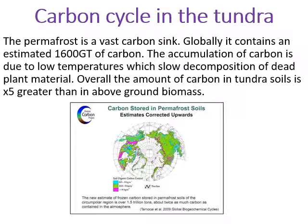What about the carbon cycle in the tundra? The permafrost — that permanently frozen ground — is a really important store of carbon, a really important carbon sink. We reckon it has about 1,600 gigatons of carbon stored within it. This is because the extremely low temperatures make decomposition of any dead plant material extremely slow. Where we do get vegetation during the summer season, it decomposes at an extremely slow rate, leaving a huge amount of organic matter locked up within the permanently frozen ground. The amount of carbon in the tundra soils is five times greater than in any plants and vegetation — that is the biggest store of carbon in the tundra.